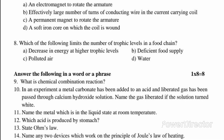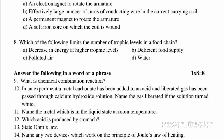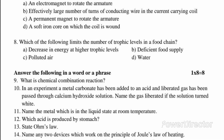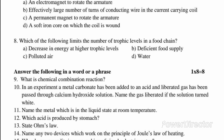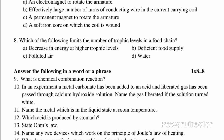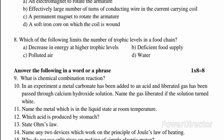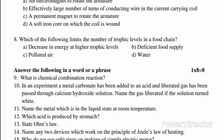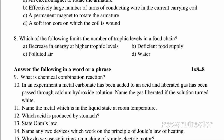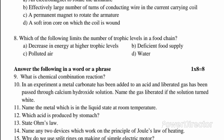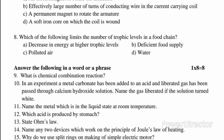One mark questions. Question 9: What is a chemical combination reaction? Answer: The reaction which involves the combination of two or more reactants to form only one product is known as a chemical combination reaction.